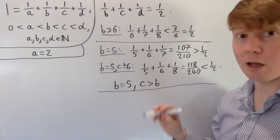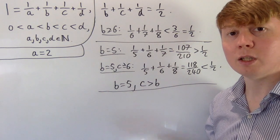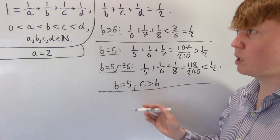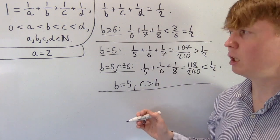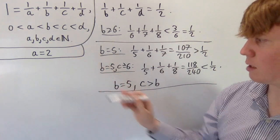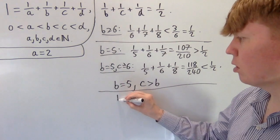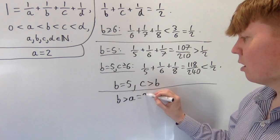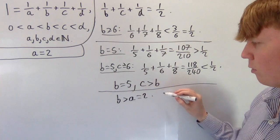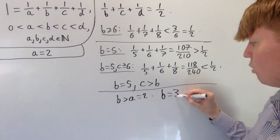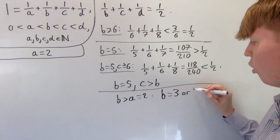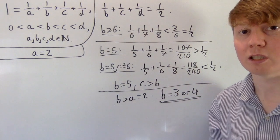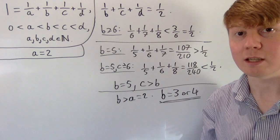So b can't be greater than or equal to five. The only options for b would be one, two, three, and four. But we know a equals two and b must be greater than a, so all that's left is b equals three or b equals four, which we'll explore in more detail now.